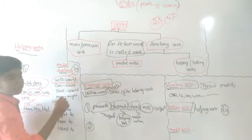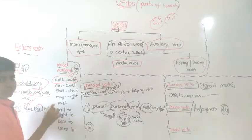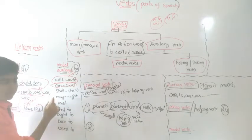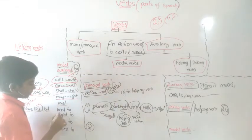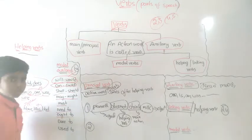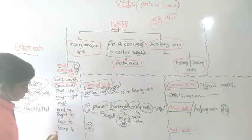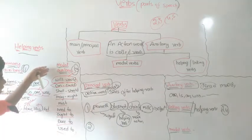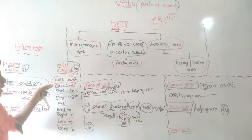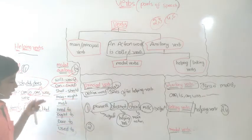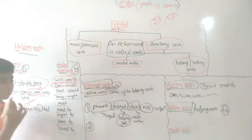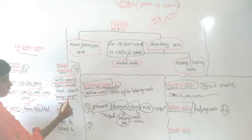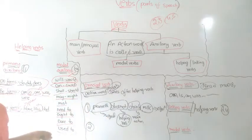The 13 modal auxiliaries are: will, would, can, could, shall, should, may, might, must, need to, ought to, dare to, and used to. That makes 13 modal auxiliaries. Together with the 11 primary auxiliaries, the total is 24 helping verbs.